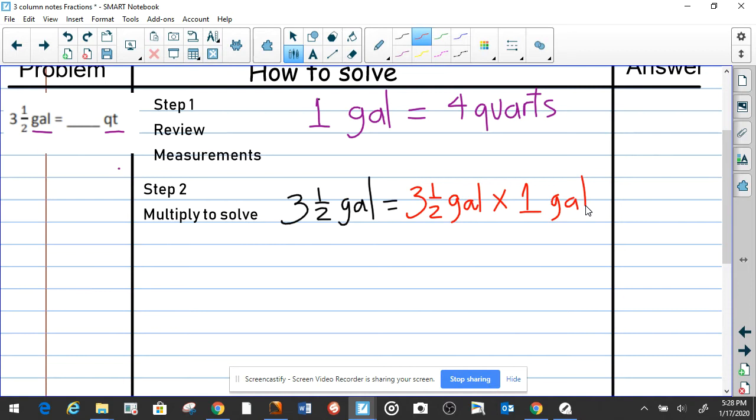Why do we do that? Remember, you always use the same measurement, but now you use only one unit. Why? Because we want to convert. This stays the same: three and a half gallons times, now the gallons are going to be converted to quarts.